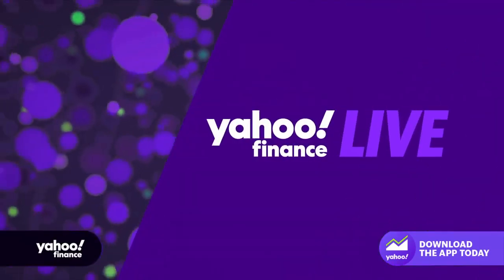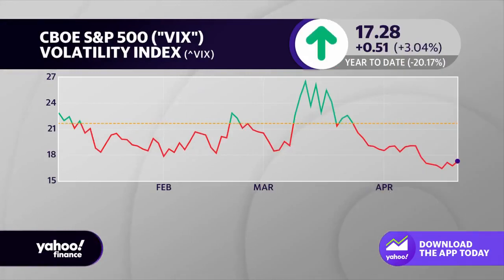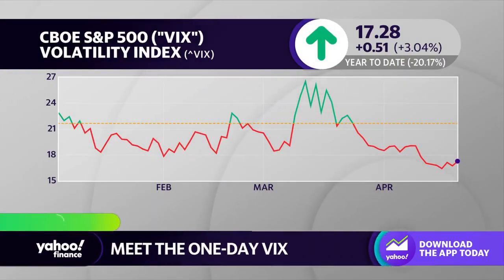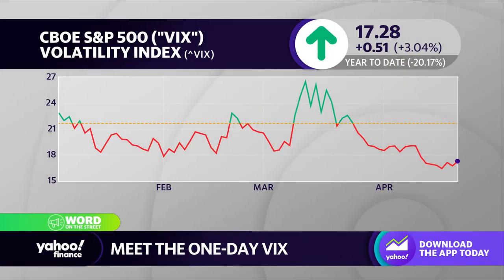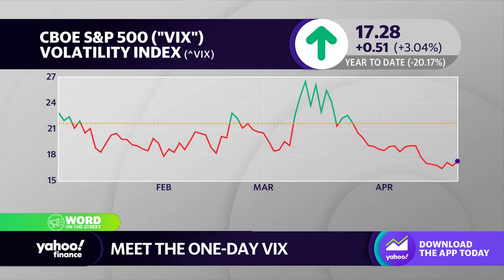The VIX, which is the volatility index, popularly known as Wall Street's fear gauge, is going through a pretty big shake-up. There is a brand new version that will track expectations of short-term market swings, and it begins today. But what does it actually do? And what does it measure?